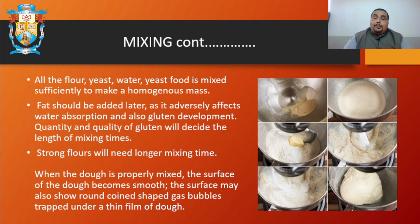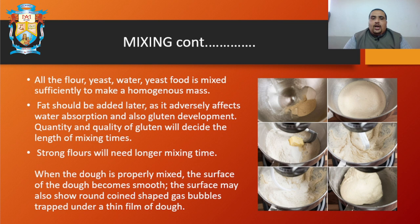Strong flour needs a longer mixing time. When it is a strong flour, the gluten content will also be very strong, requiring a longer mixing time. When the dough is properly mixed, the surface becomes smooth and gets a sheen. The surface may also show round contained shapes — gas bubbles trapped under a thin film of dough. When this consistency is attained, mixing is complete.